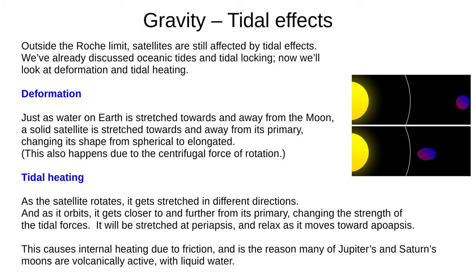There is also deformation, which we saw in these two images. Just as water on Earth is stretched towards and away from the Moon, a solid satellite is stretched towards and away from its primary, changing its shape from spherical to elongated. This also happens to rotating objects due to centrifugal force. And there's tidal heating — as the satellite rotates it is stretched in different directions, and as it orbits it gets closer to and further from its primary, changing the strength of the tidal forces. It is stretched at periapsis and relaxes at apoapsis. This causes internal heating due to friction. This is why many of Jupiter's and Saturn's moons are volcanically active, with liquid water.